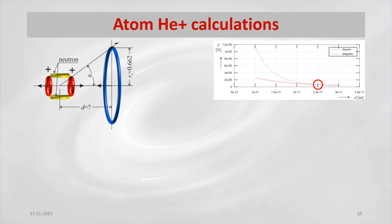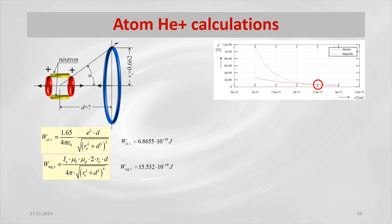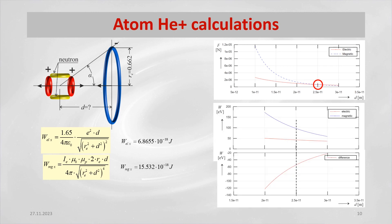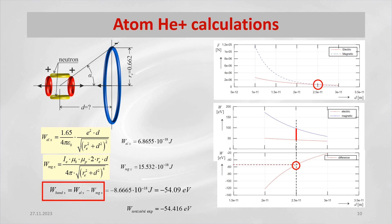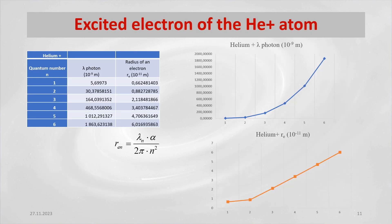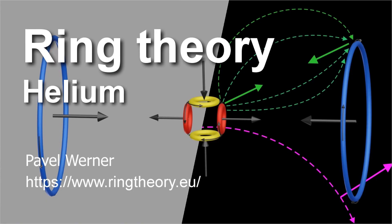The equations for the calculation of electric and magnetic energy in the x-axis are derived from the equations for the calculation of electromagnetic forces. The value of bond energy is calculated as the difference between electric energy and magnetic energy. The quantified value of 54.09 electron volts corresponds to the experimentally measured value. The table shows the wavelengths of photons according to the spectra database when electrons are excited from the n level to the n+1 level. From these wavelengths of photons, the radii of the electrons are calculated when the electrons are excited always one level higher. While photon lengths grow exponentially, electron radii grow linearly. Thank you for your open mind. For more information on ring theory, see www.ringtheory.eu.